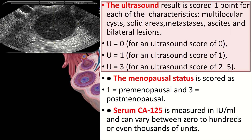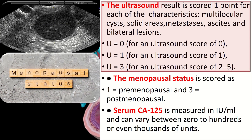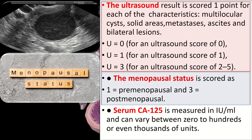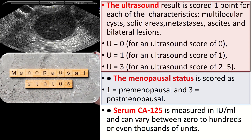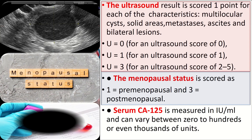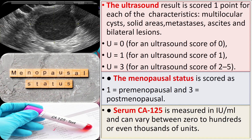Menopausal status is scored as 1 for pre-menopausal and 3 for post-menopausal. Post-menopausal is defined as women who have had no periods for more than a year, or women over 50 who have had a hysterectomy. Serum CA-125 is measured in international units per ml and can range from 0 to hundreds or even thousands of units.